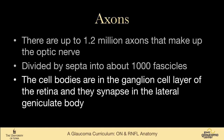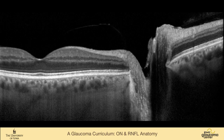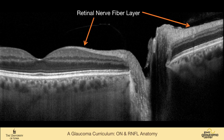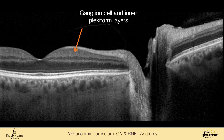The cell bodies are in the ganglion cell layer of the retina, and they synapse in the lateral geniculate body in the brain. This is a high-resolution OCT scan of my retina. You can see the foveal pit and the optic nerve head. The retinal nerve fiber layer is very thin over the central macula because everything is displaced away from the fovea, and then the ganglion cell and interplexiform layers are a little bit hard to separate out on OCT.